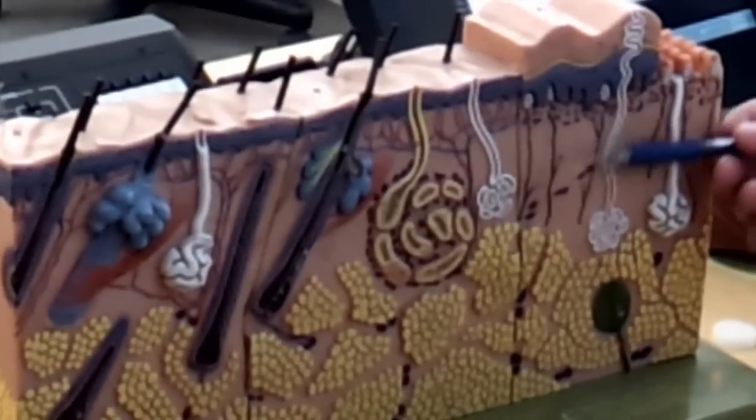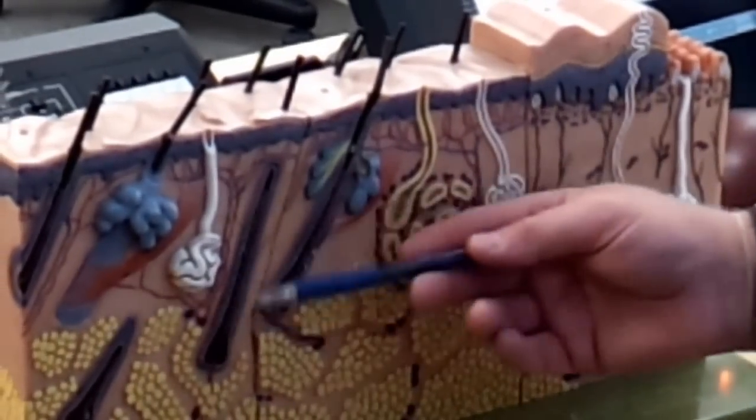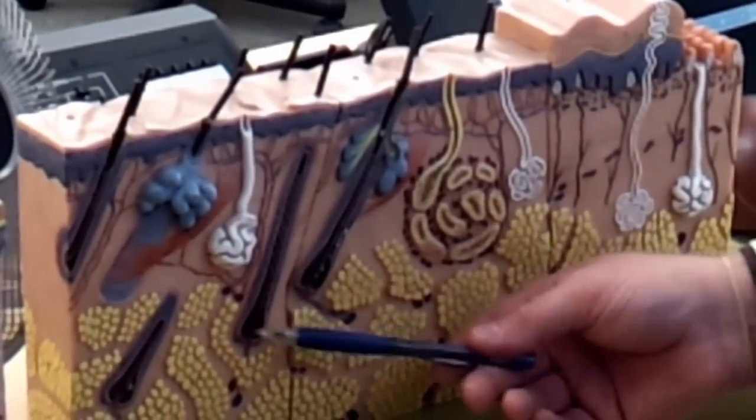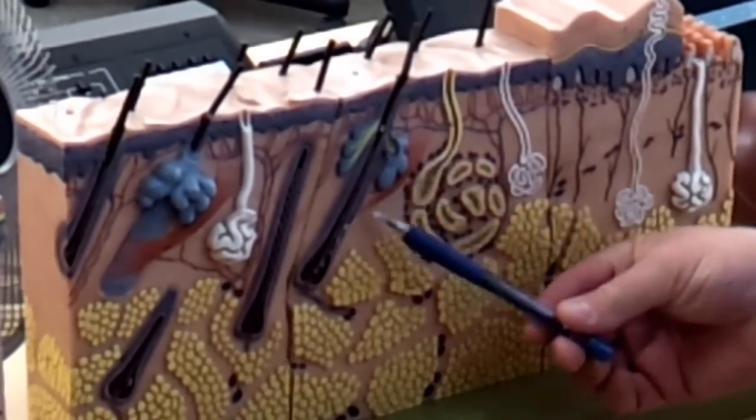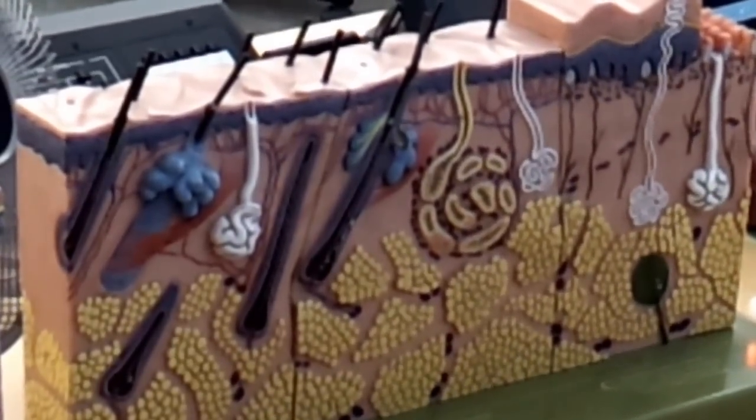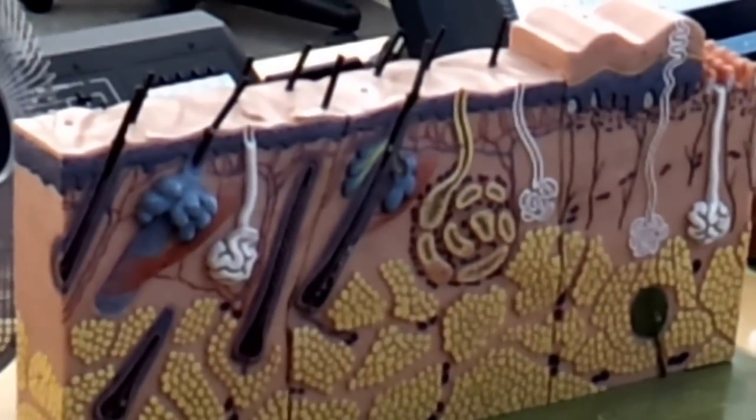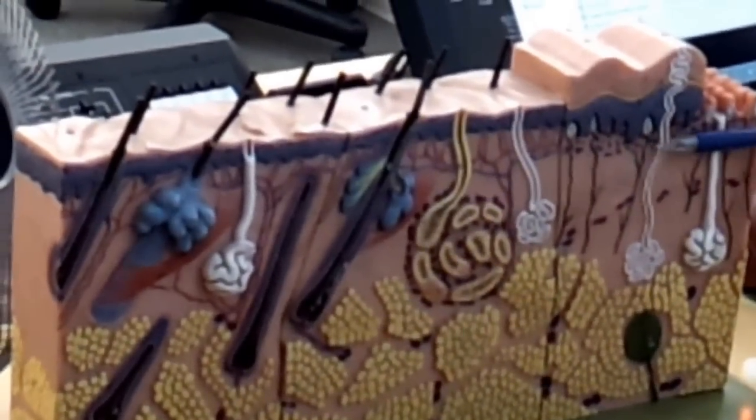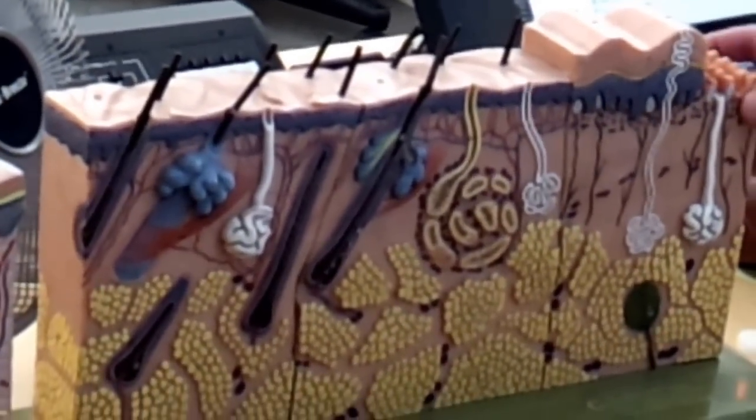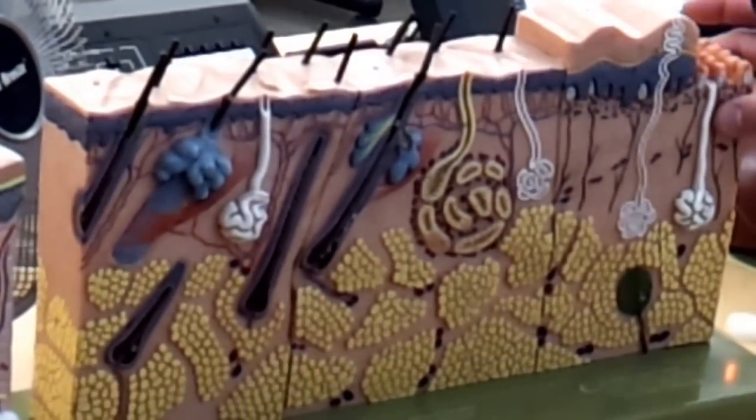So the dermal layer, where we find all these specialized structures—glands, hair follicles, papilla, erector pili smooth muscle—most of that is in the reticular layer, the bottom 80 percent of the dermis. The top 20 percent would be the papillary layer where we find that interface between epidermis and dermis.